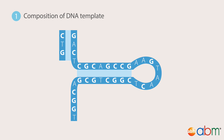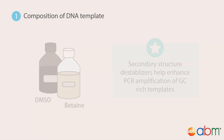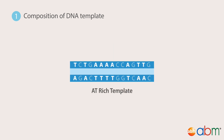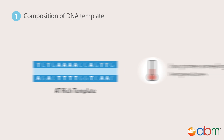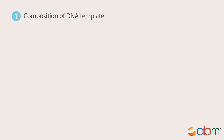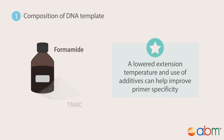In these cases, secondary structure destabilizers such as DMSO can be added. AT-rich templates also require special attention because of their low primer annealing temperatures. Non-specific primer annealing can occur under low annealing temperature, and primer specificity can be retained using a combination of lowered extension temperature and the use of additives such as TMAC.